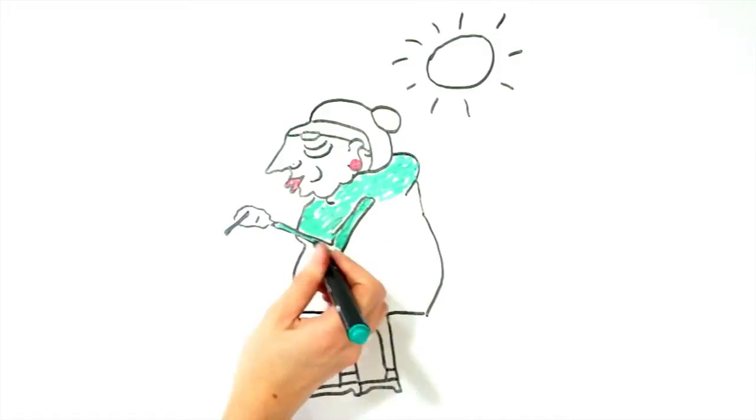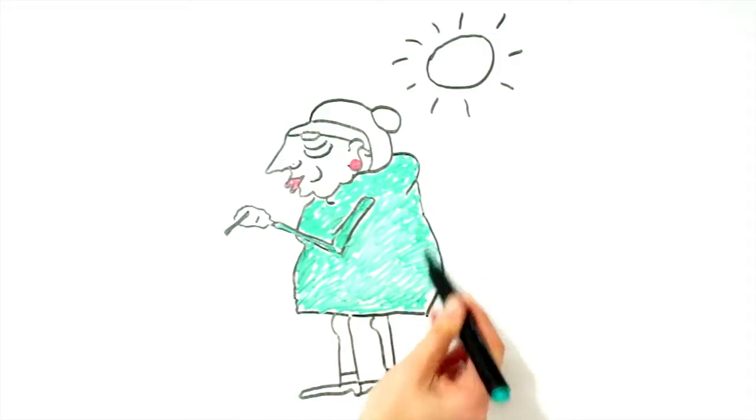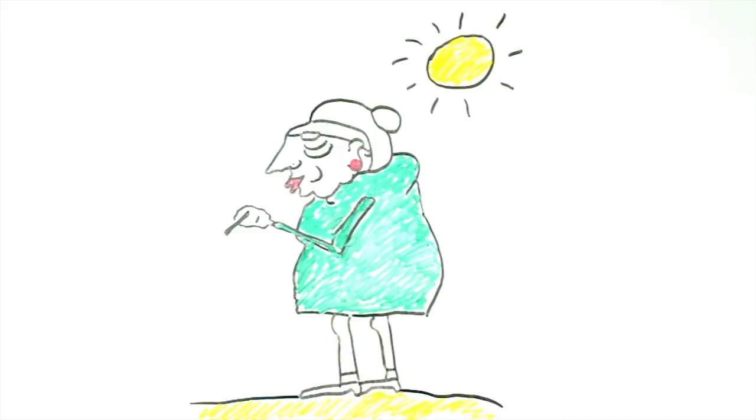These are all signs of oxidative damage, and people who are exposed to high levels of oxidative damage, such as regular use of sunbeds or smoking, will show these signs earlier in life.